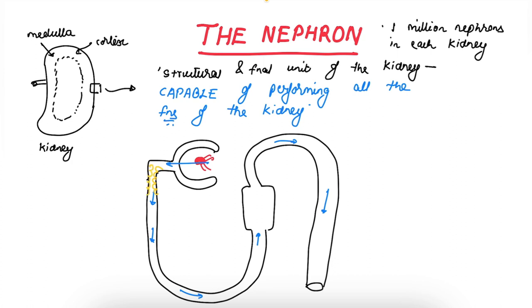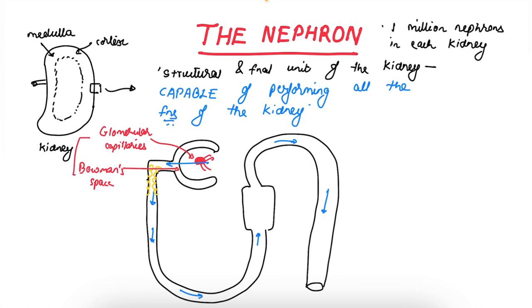Lining the proximal tubule are epithelial cells through which fluid and electrolytes are reabsorbed, and some substances are secreted — such as potassium, hydrogen, waste products of metabolism, and drugs like penicillin. The glomerular capillaries and the Bowman's capsule together form the renal corpuscle.